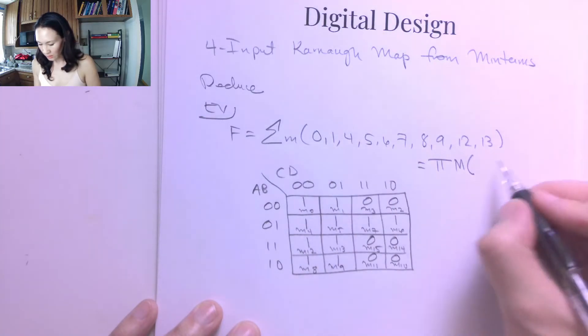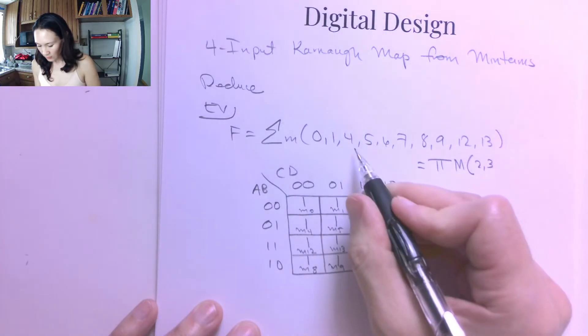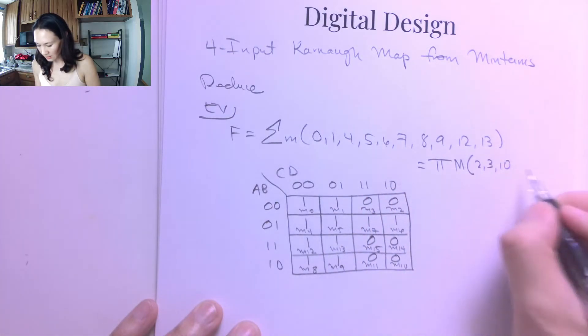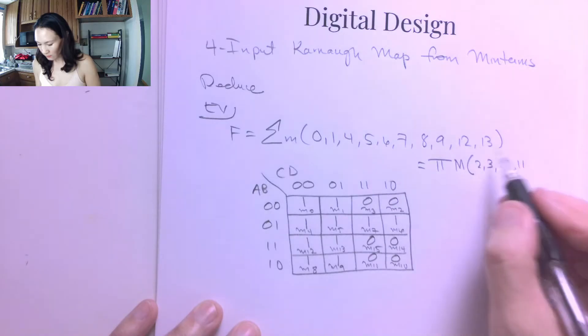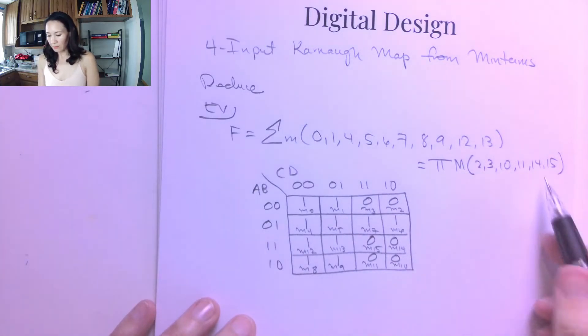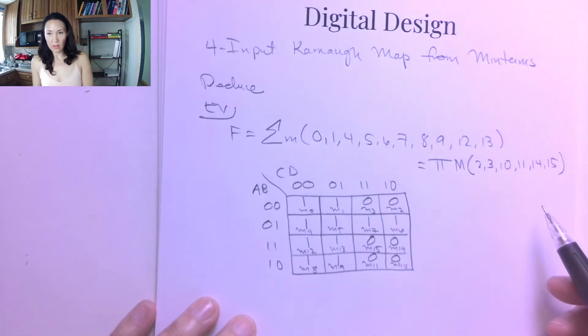And whatever is not there will be in this list. So that would be 0, 1, 2, 3, 4 is in the list, 5, 6, 7, 8, 9, but 10 is not in the list, 11 is not in the list, 12, 13, 14, and 15 is the last number if we have 4 inputs.